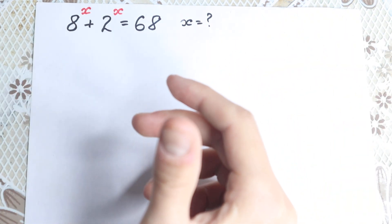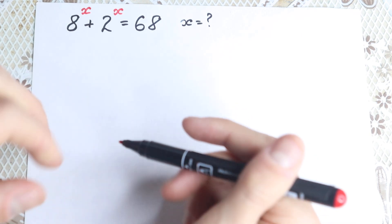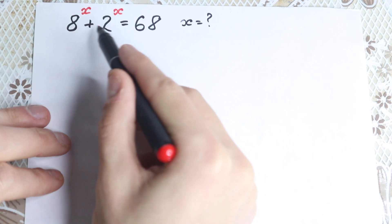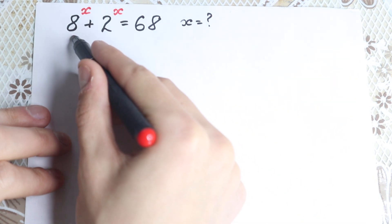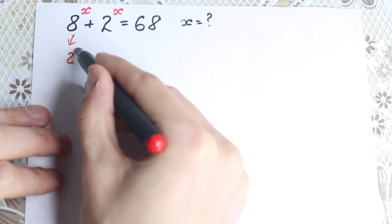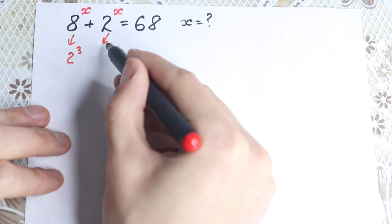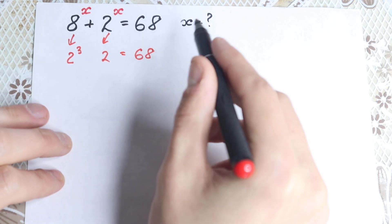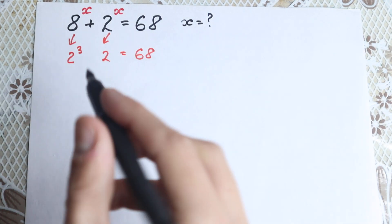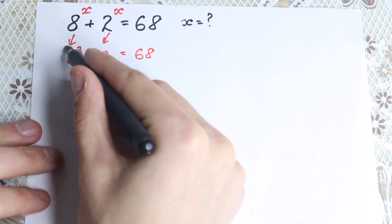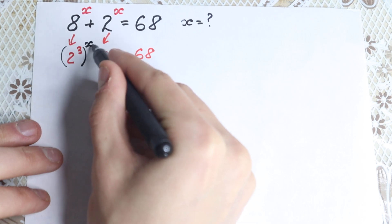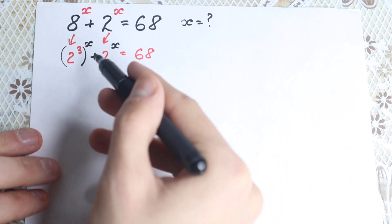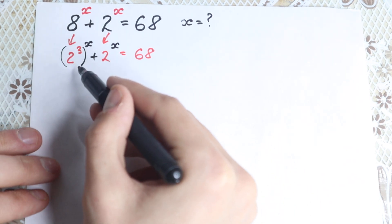First of all, we have 8 and 2. These are really good numbers, because we can write 8 as 2 cubed, giving us the same base. So as a first step, 8 can be written as 2 cubed, and we keep 2 to the x on the left and 68 on the right. We now have the same base throughout this expression.